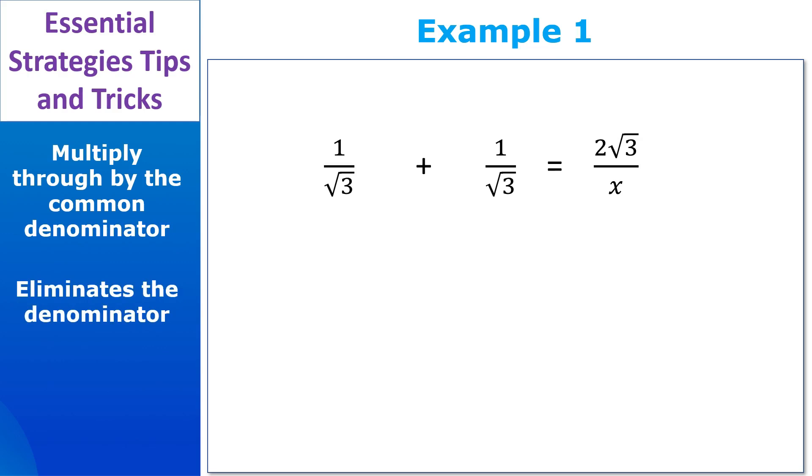Now the easiest way to find a common denominator is to simply multiply the denominators together. And in this case, the common denominator is root 3 times x, so we multiply that through the entire equation.